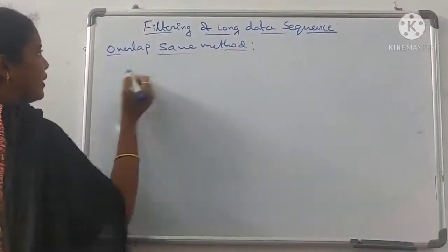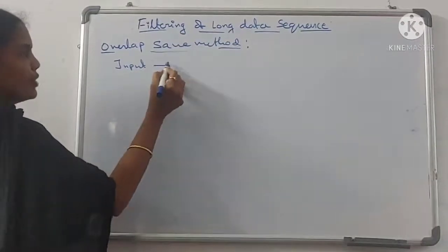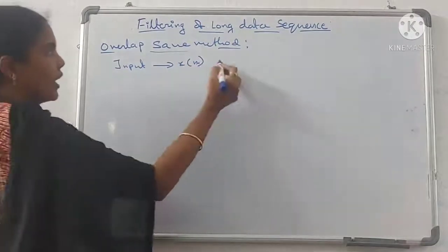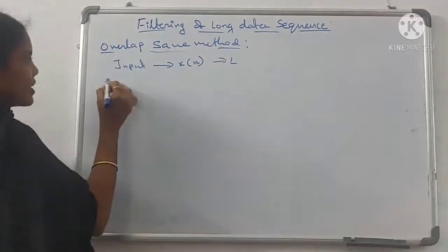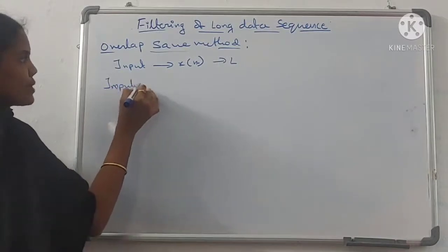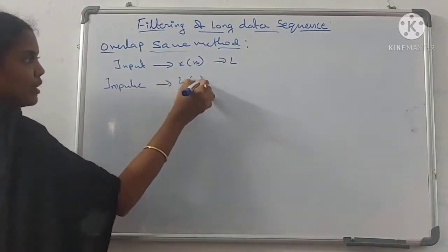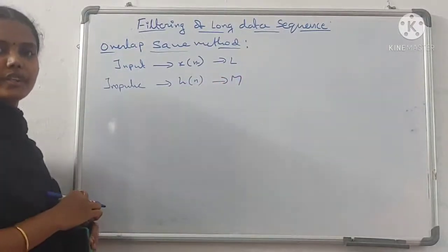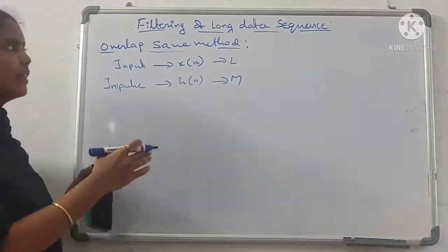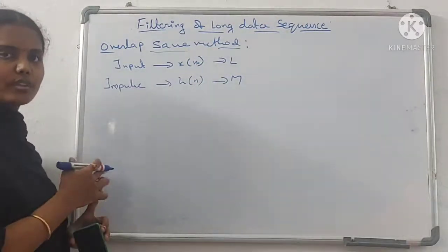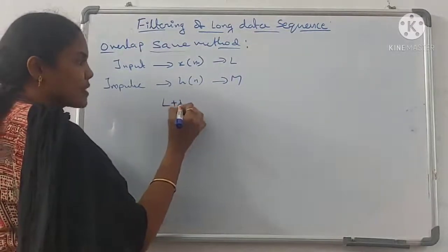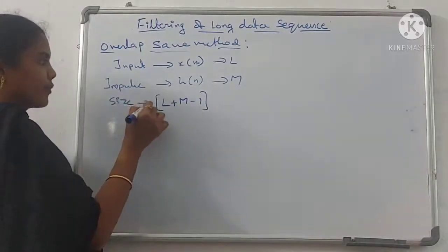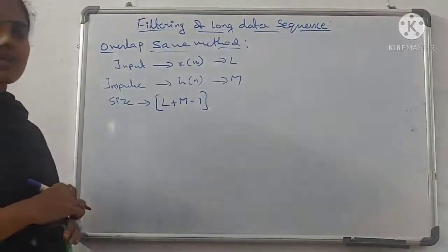In the overlap save method, the input sequence is represented as x(n) of length L, and the impulse response is represented as h(n) of length M. The entire input signal is divided into blocks of size L plus M minus 1, and this is the size of each block.